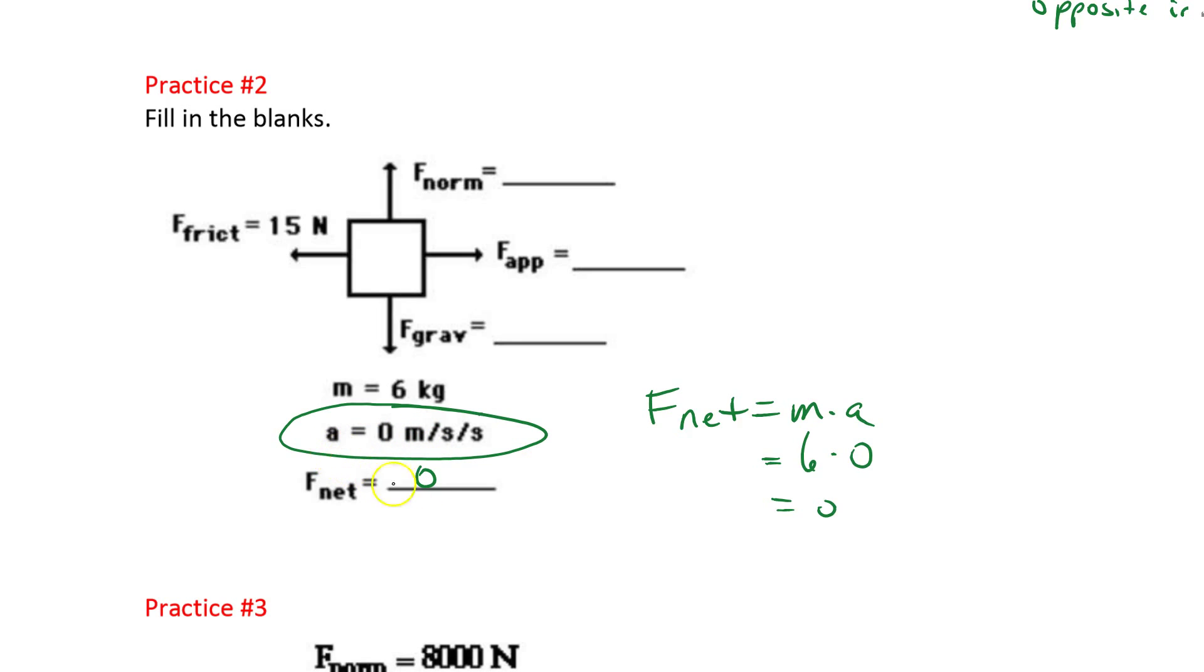Or if you see the words constant velocity, you know F net is equal to zero. Another way of saying this, F net equals zero, is that the forces are balanced. We talked about balanced forces before, so really everything's going to cancel out. In this case, we have only two horizontal forces. So if friction is 15 newtons to the left, then the applied force must be 15 newtons to the right.